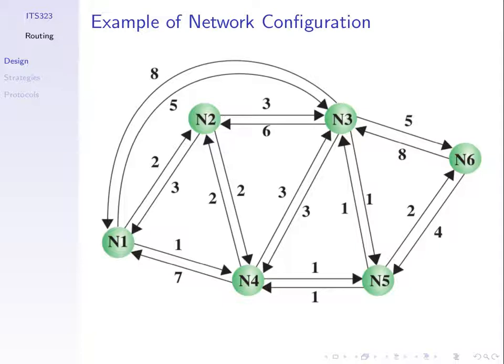We often care about neighbours — the nodes which we have direct links to. Node 1 has three neighbours: nodes 2, 3, and 4. In practice, a node normally knows its neighbours because there's a cable connecting them. So whoever operates node 1 knows who is at the other end of each link. However, a node may not know about other nodes further in the network.